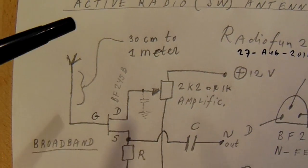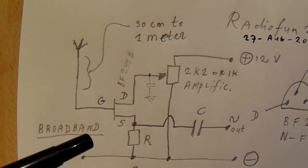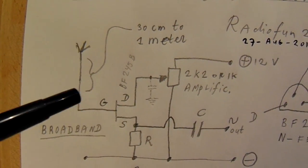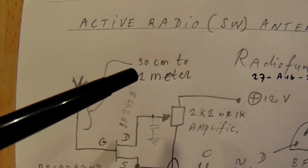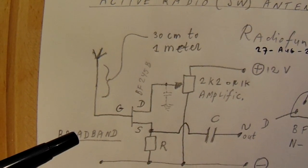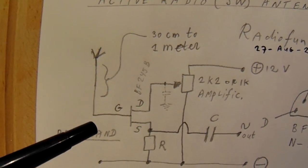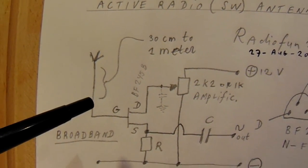So that means that it has a kind of own capacitance and inductance. But with these values, 30 centimeters up to one meter, it's a good active antenna and you don't need a capacitor here to get more selectivity.